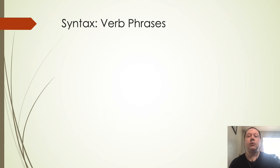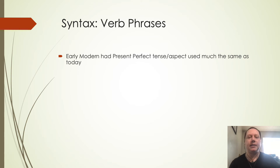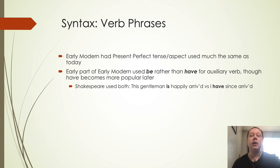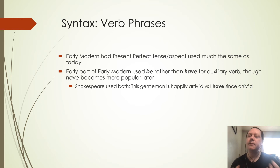With verb phrases, they had some of the same kinds of tense and aspect systems used similarly to what we see today — more complexity than Middle English but not quite as much as present-day English. During the early part of Modern English they were starting to use 'be' rather than 'have' for an auxiliary verb. 'Have' becomes more popular later, and we can see this in flux during Shakespeare — 'this gentleman is happily arrived' versus 'I have since arrived' — both examples from Shakespeare. 'Have' eventually wins out.